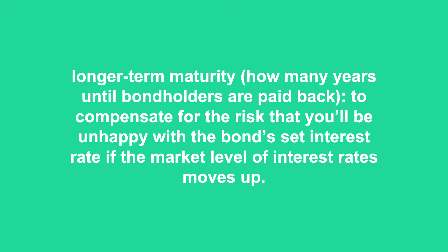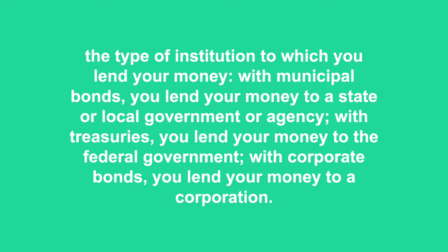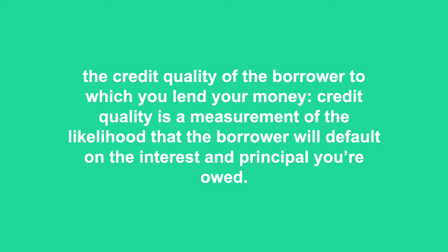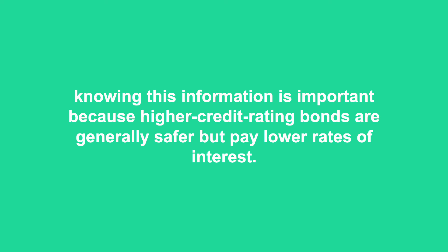Bonds differ from one another in the following major ways: the type of institution to which you lend your money. With municipal bonds, you lend to a state or local government. With treasuries, you lend to the federal government. With corporate bonds, you lend to a corporation. Credit quality measures the likelihood that the borrower will default. Higher credit rating bonds are generally safer but pay lower rates of interest. Short-term bonds mature within 5 years, intermediate bonds within 5 to 10 years, and long-term bonds within 30 years. Longer-term bonds generally pay higher yields but fluctuate more with changes in interest rates.